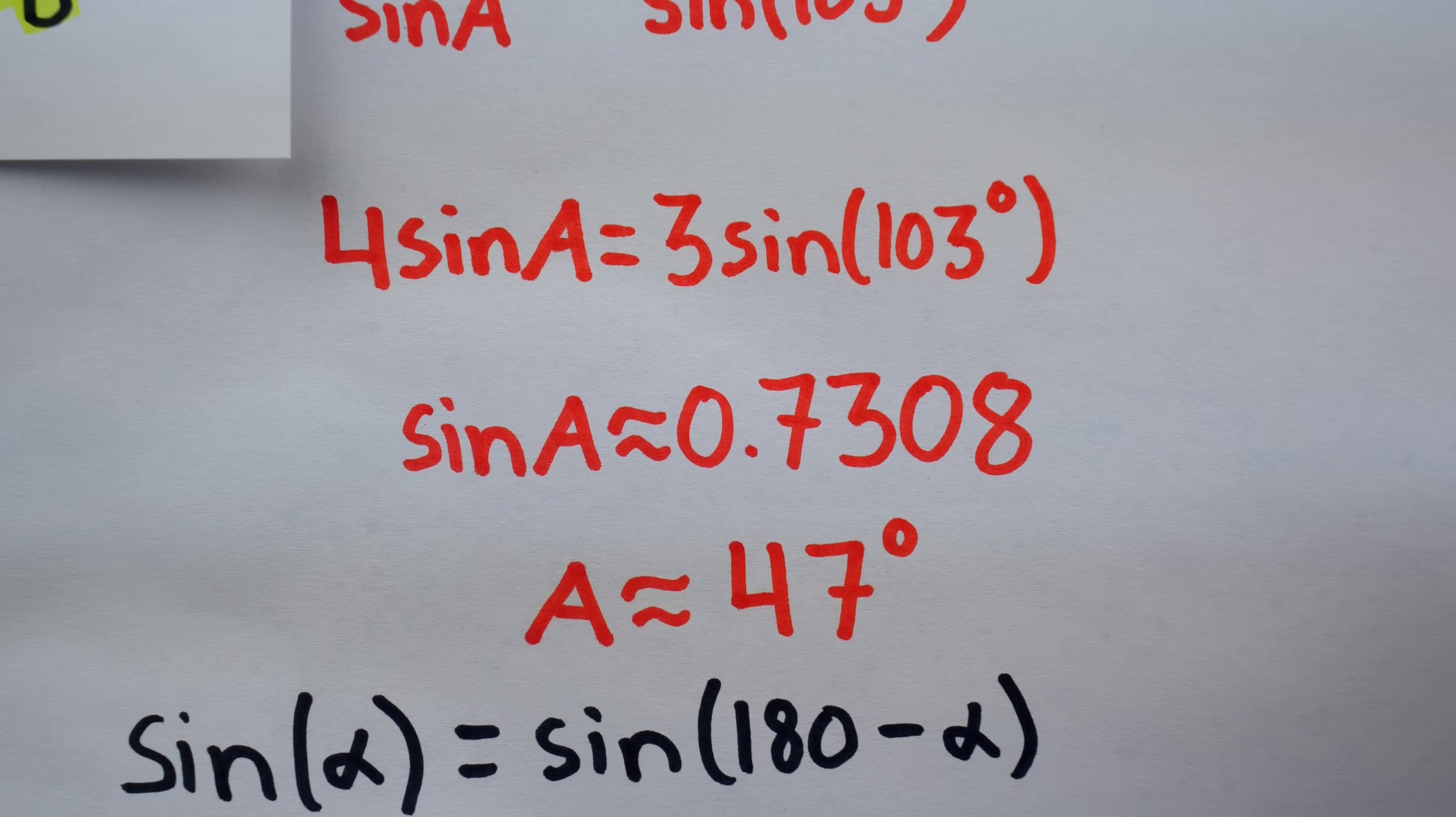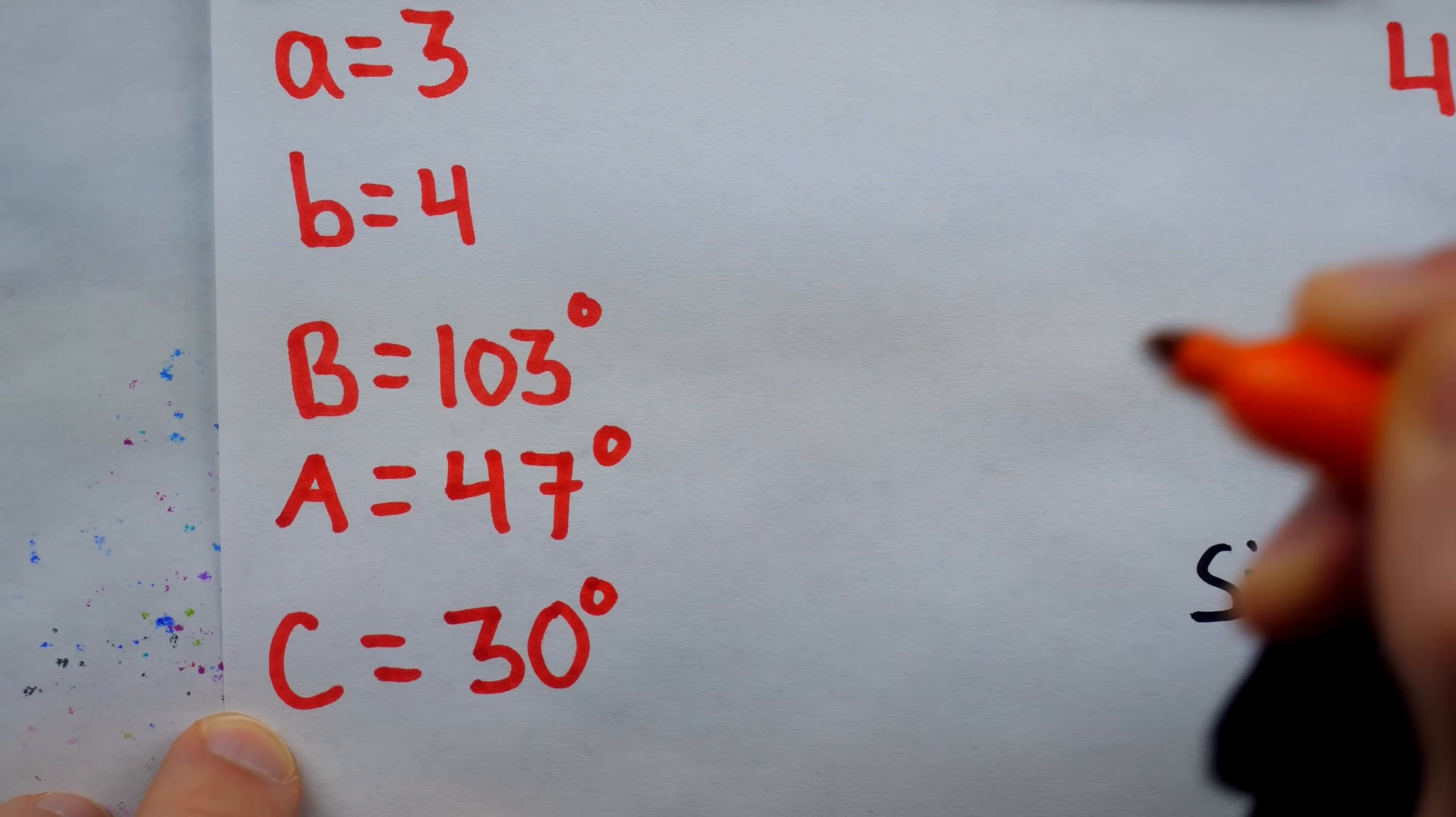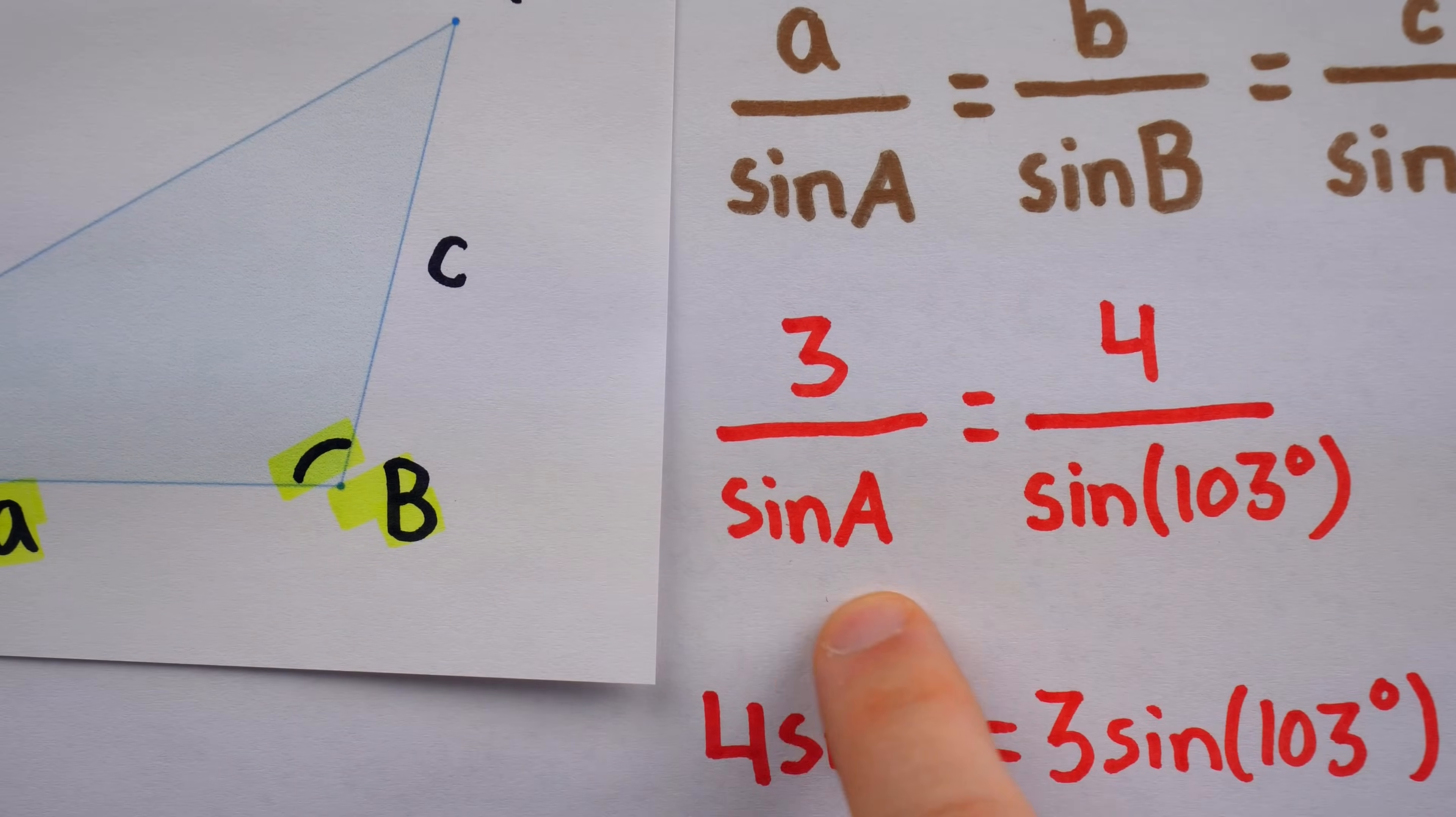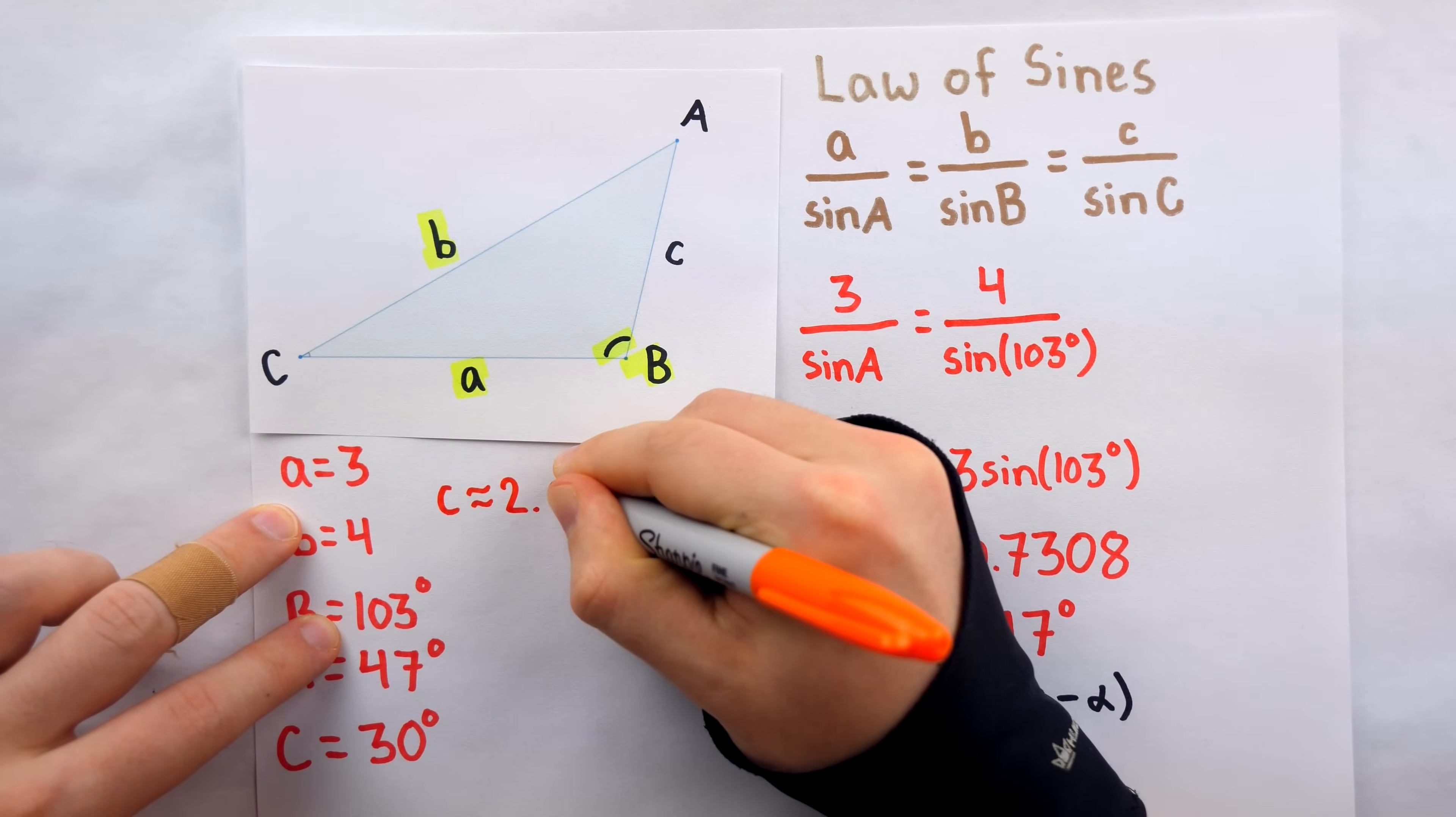However, some of you may be noting potential for an issue here. Because, in fact, 47 degrees is not the only angle that would have this sine value. It's a property of the sine function that sine of any angle, let's say alpha, is equal to sine of 180 minus alpha. For those of you who know the unit circle, this identity comes from the fact that it's really just a reflection across the y-axis. So, the y-coordinate, hence the sine value, is not changed. So then, how do we know that the correct angle here is 47 degrees, and not the supplementary angle, 133?